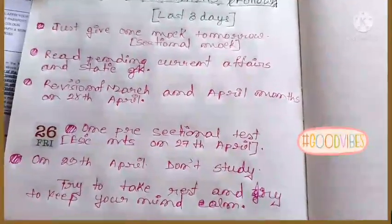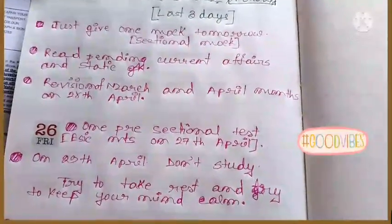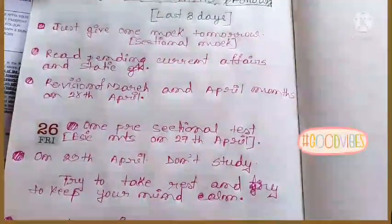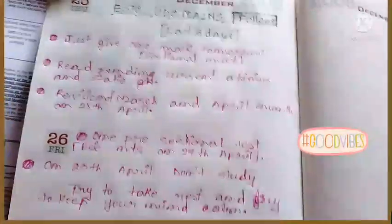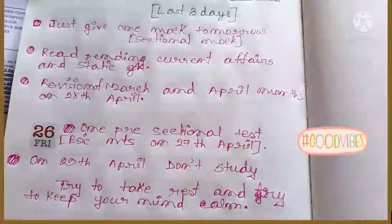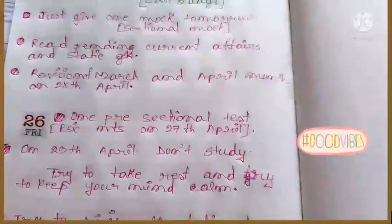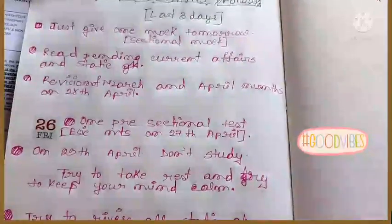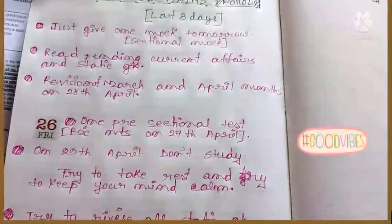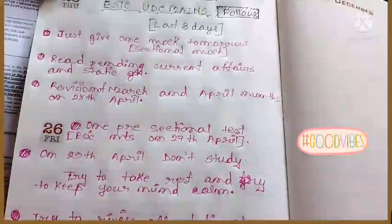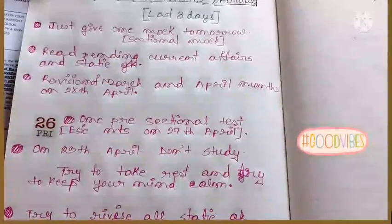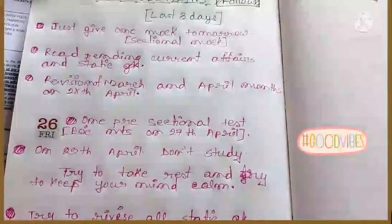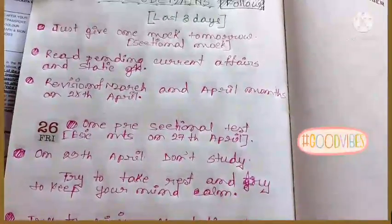I have to prepare current affairs and static GK — specifically the pending current affairs I didn't read in the 14 to 15 days after the prelims examination. I want to revise them all tomorrow and also do some GA question quizzes available on Affairs Cloud and PM Mock. Practicing those quizzes will help you remember GA and perform well in the real examination.